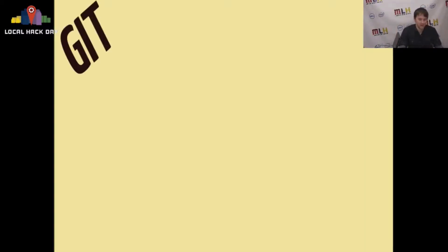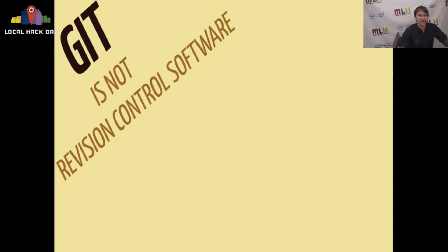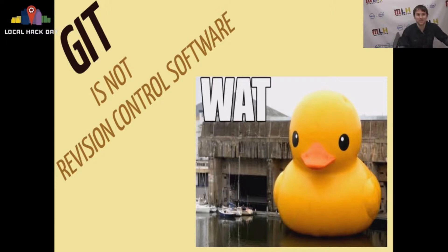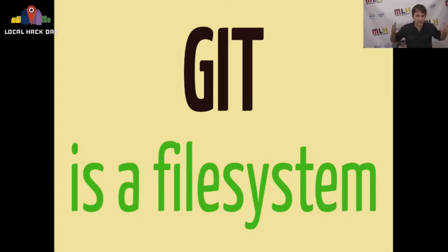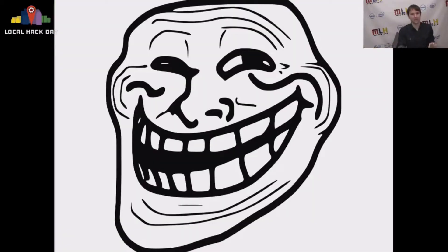So first of all, what is Git? Git is not revision control software. Git is a content addressable file system — a content addressable file system that happens to have some version control features. So as we go through the rest of this talk I want you to keep that in mind. Git isn't just version control. It's not even version control as a first-level citizen. It's a file system with version control features, and I'm not trolling you, I promise.